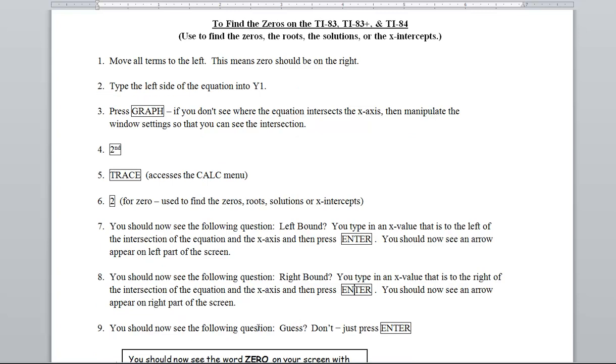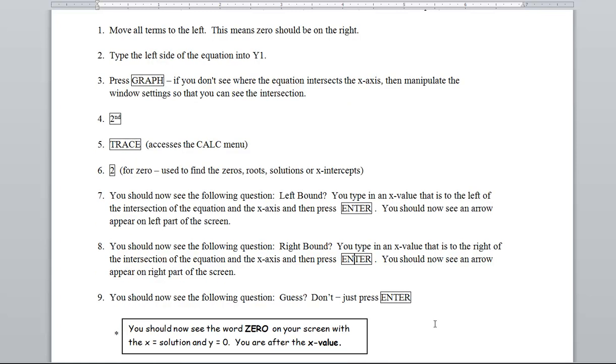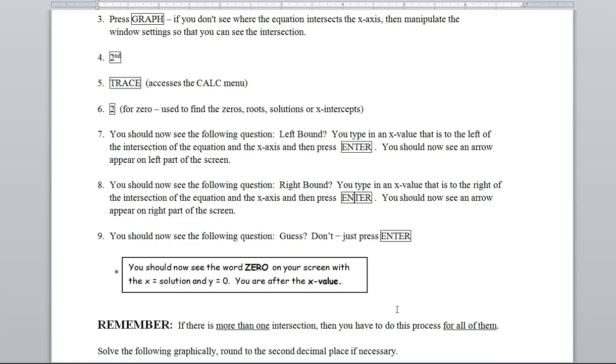You now get the following question: guess. But we don't. I mean you've done enough work. Just press enter. You should now see the word zero on your display screen with x equal a number which is your solution and y equals zero. You're after the x value. Remember, if there's more than one intersection then you have to do this process for all of them.